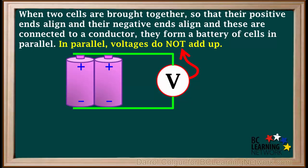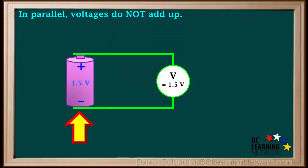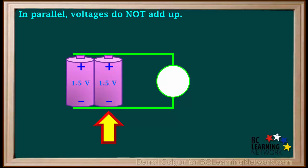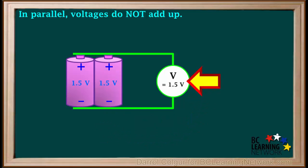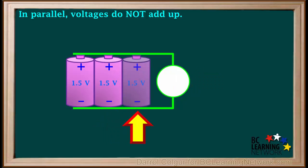In parallel, voltages do not add up. For example, if the voltage of one cell is 1.5 volts and we add another cell in parallel, the voltage will still be 1.5 volts. Even adding a third cell in parallel will still give us a voltage of 1.5 volts.